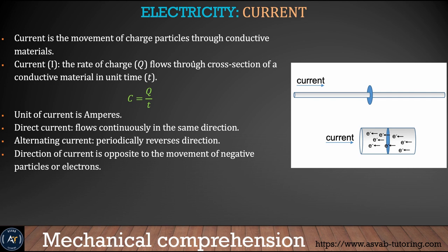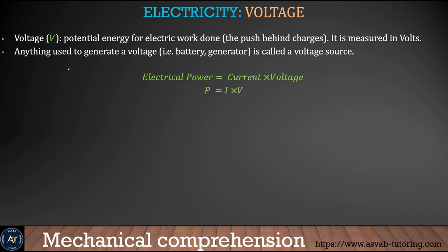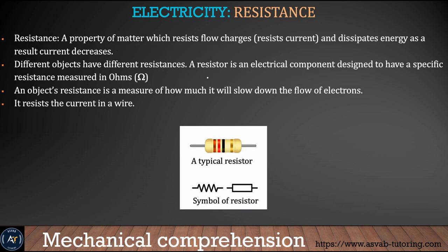In electricity we need to learn three main things: current, resistance, and voltage. Current is the flow of electrons; it is defined as Q over T (charge over time) and its unit is the ampere. There are two types of current: direct current (DC) and alternating current (AC). Voltage is the potential energy for electrical work done. Electrical power equals current times voltage.